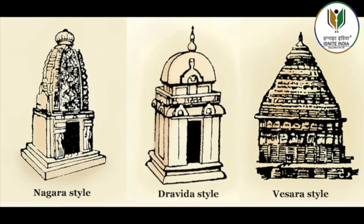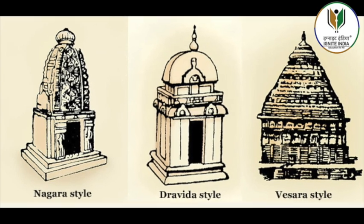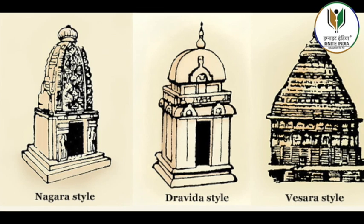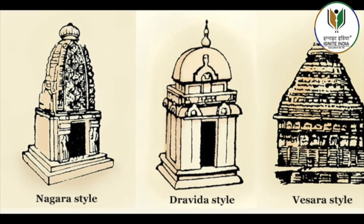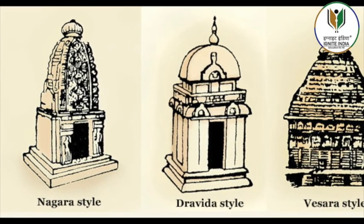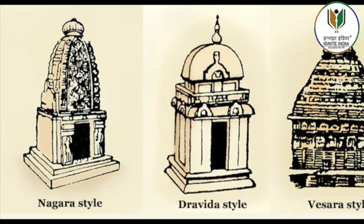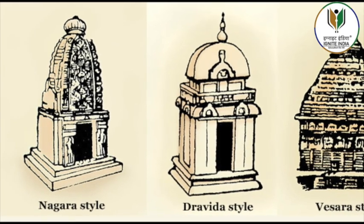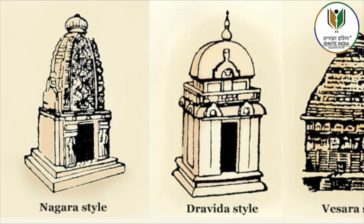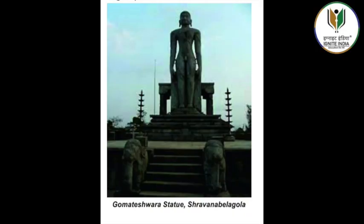Depictions of crowned Buddha occur commonly only after the 10th century. Later, other major Buddhist monasteries developed in Odisha. Lalitgiri, Vajragiri and Ratnadiri are the most famous of them. The port town of Nagapattinam was also a major Buddhist centre right until the Chola period.